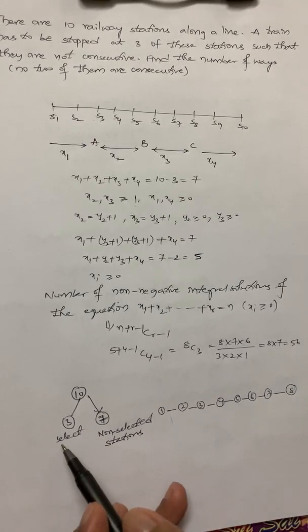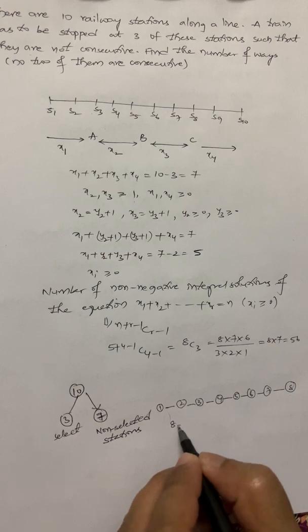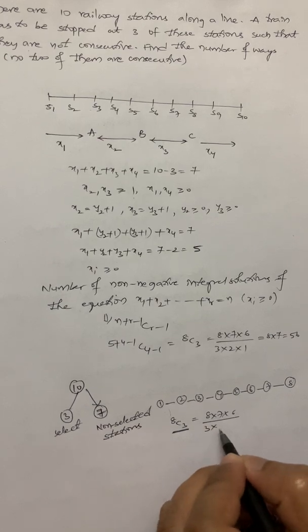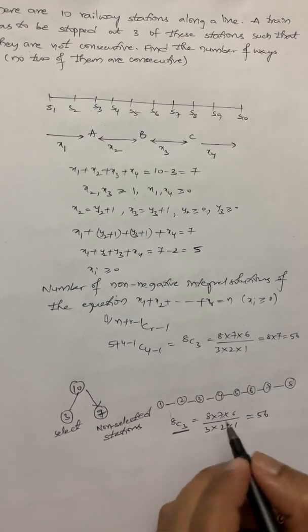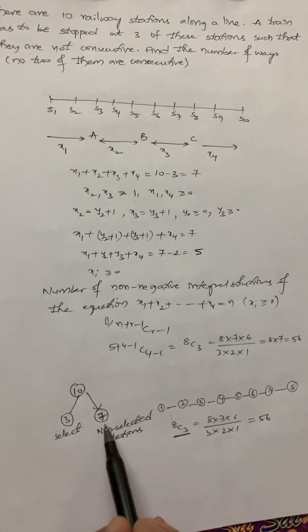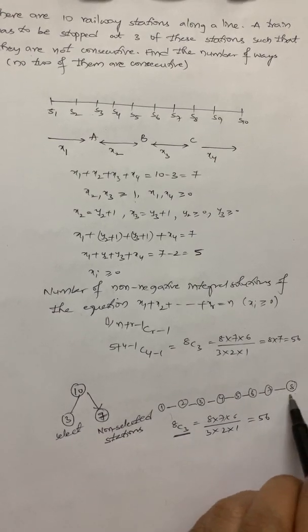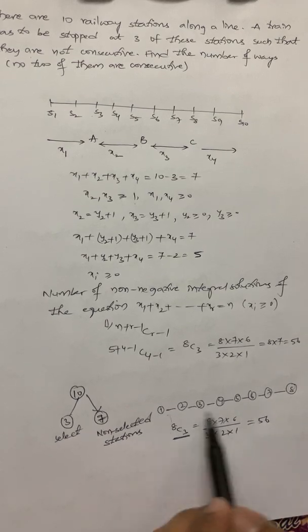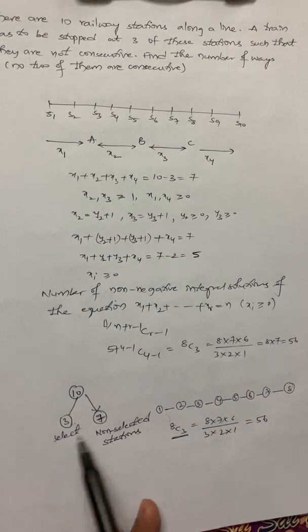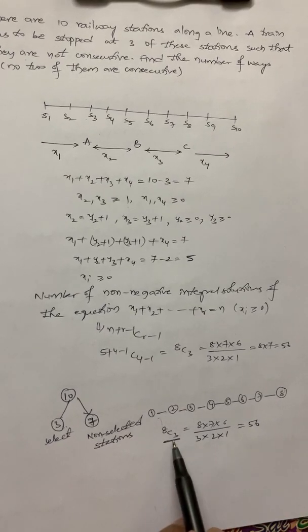In these 8 places, we have to select only 3 places. If I select 3 places out of 8, the number of selections will be 8C3. This is 8 into 7 into 6 by 3 into 2 into 1. Again, for this question, I can do it easily like this. First we will arrange the non-selected stations. The non-selected stations are 7, first arrange them. Among them, there are 8 places. Out of these 8 places, we have to select 3, so that our criteria is satisfied. The number of ways in which we can do are NCR. So, 8C3.